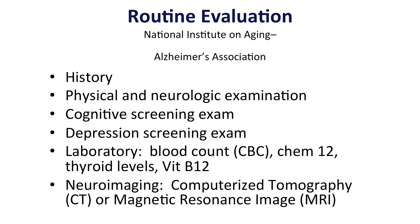The routine evaluation as recommended by the National Institute on Aging and Alzheimer's Association consists of the following components: taking a thorough dementia history, performing a thorough physical and neurologic examination, undertaking a cognitive screening examination, screening for depression, laboratory assessment including a complete blood count, chemistries, thyroid levels, and vitamin B12, and a form of neuroimaging.